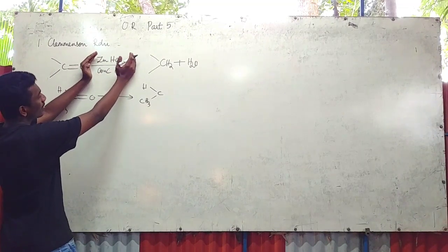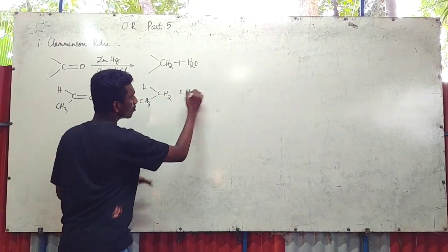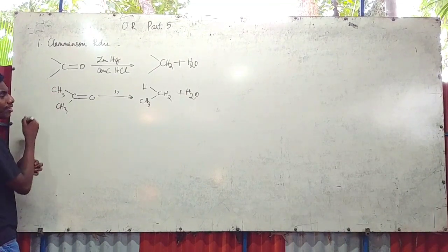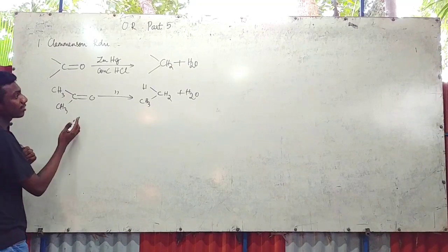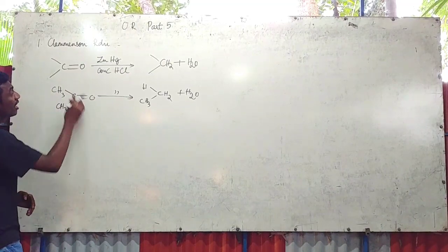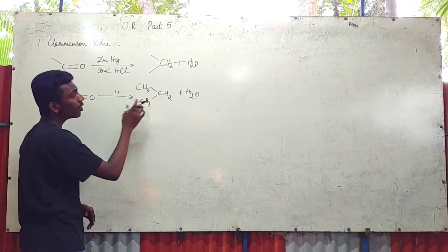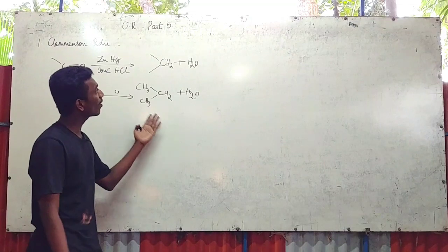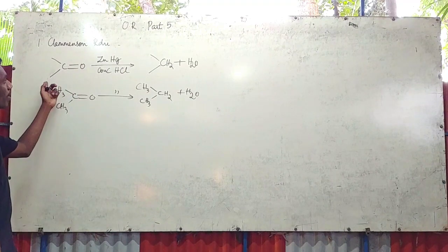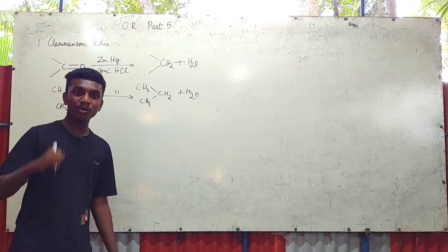This reagent is very important. Taking a ketone example — acetone (CH3-CO-CH3) — when we apply Clemmensen reduction, the C=O is converted to CH2, giving CH3-CH2-CH3, which is propane. So the carbonyl group is converted to a hydrocarbon. This is Clemmensen reduction. Let's move on to the second reaction.